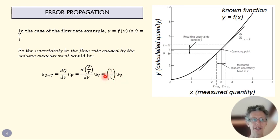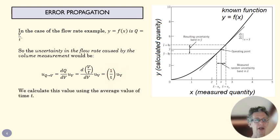So our uncertainty in the flow rate caused by the volume measurement is this value here. When we calculated that, when we wanted to turn that into a number, we'd use the average value of t here. We would have found this earlier, right? The uncertainty in the volume, we did find a random uncertainties, maybe a systematic uncertainty.